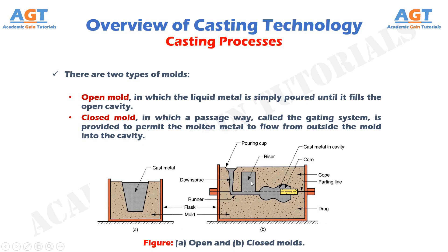There is also a riser made into the mold to indicate whether the cavity is filled or not. This closed mold has two parts, but for casting more complex shapes, an extra part may be added in between the drag part and the cope part. That part in the middle is called the cheek part.